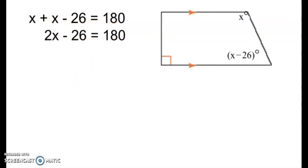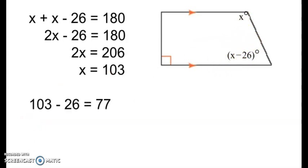Combine like terms. We add 2x minus 26 equals 180. Add 26 to both sides, you get 206. And then divide both sides by 2, and you get 103. That is this angle here. To find the second angle, you subtract 103, that x minus 26, and we get 77. So let's type it in.